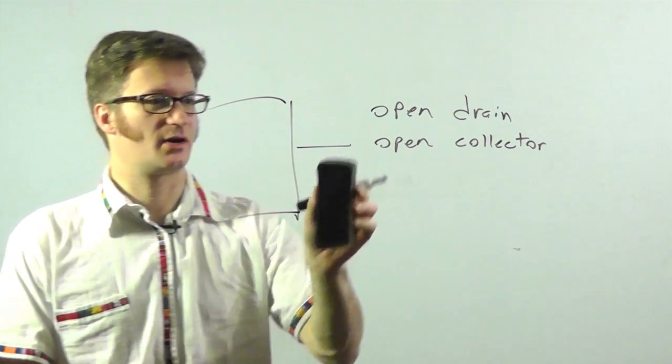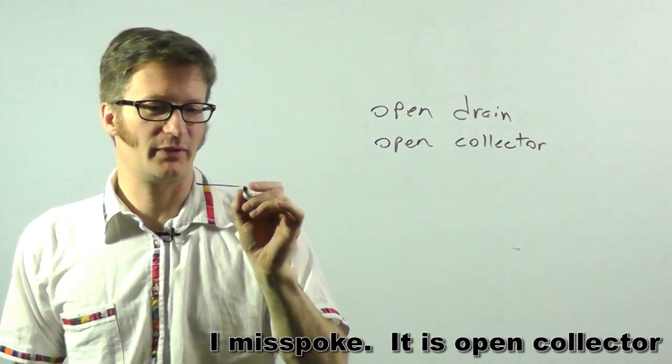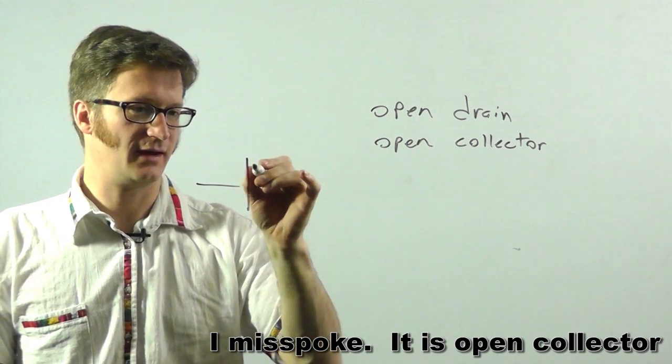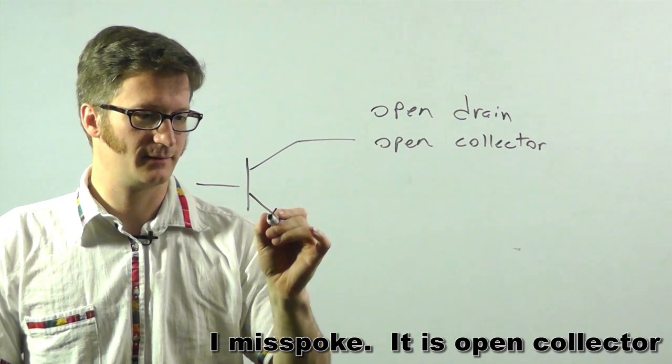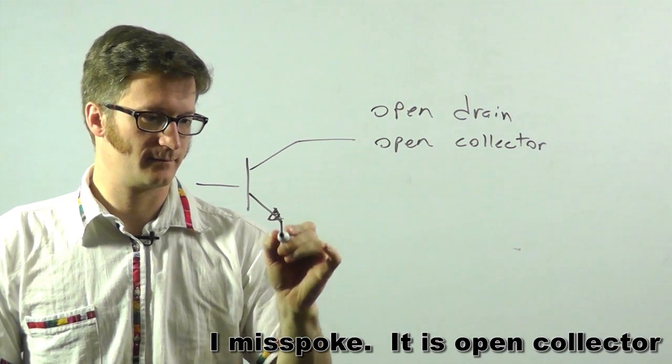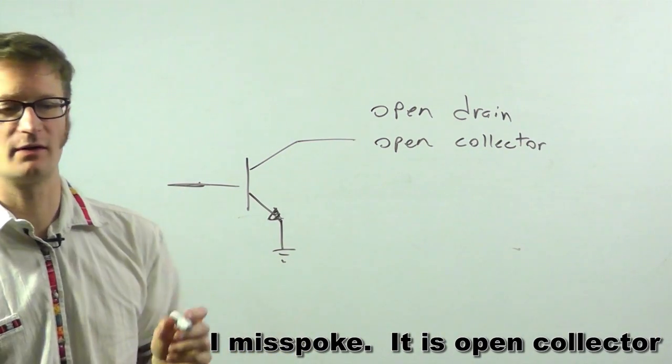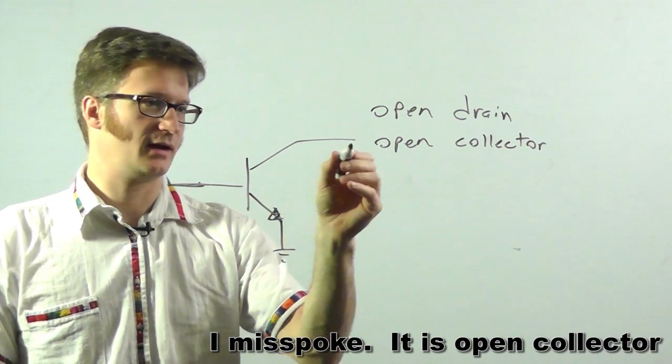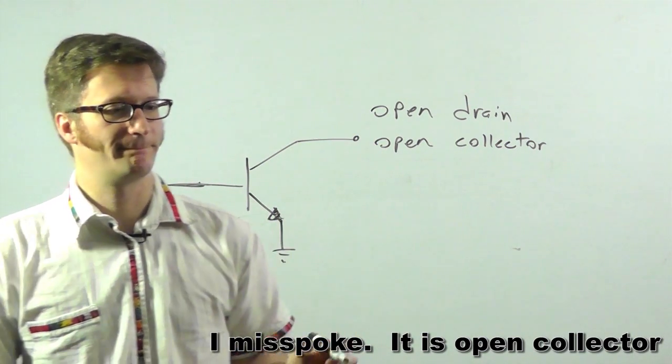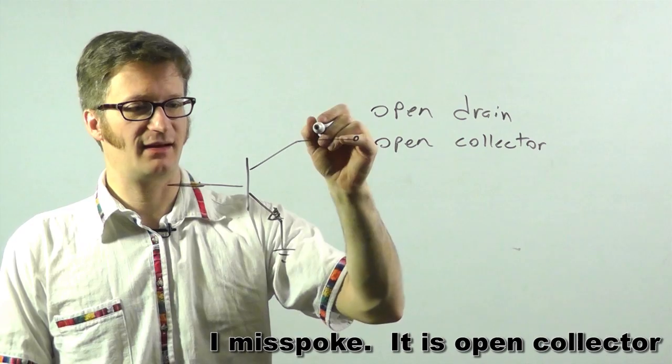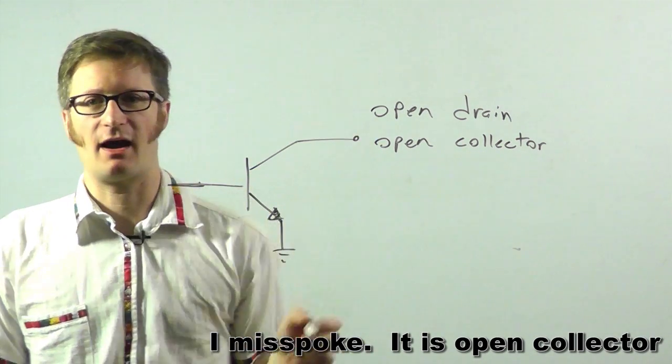I'll draw open drain first. Open drain is just simply you have a transistor here, an NPN. So this is coming from your circuit, and this is the actual output here.